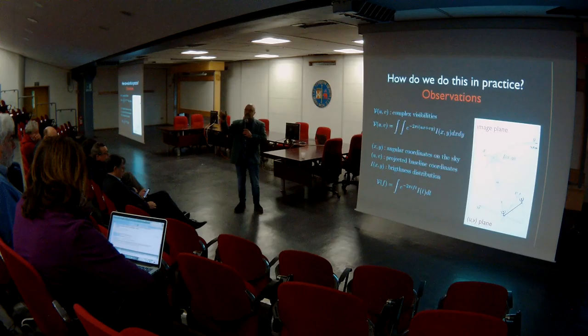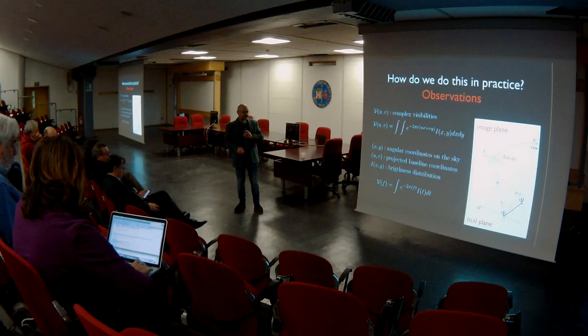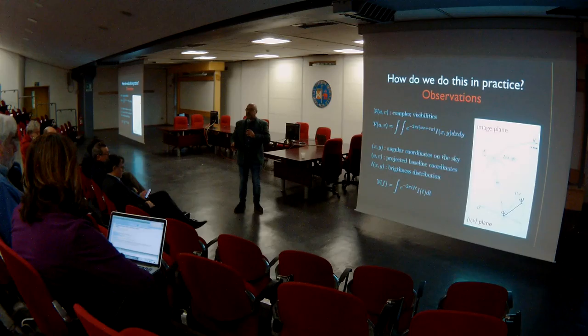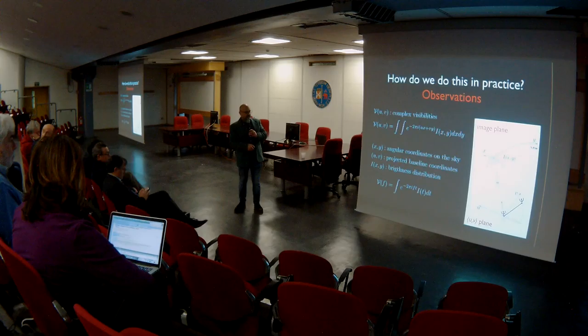X and Y are the angular coordinates projected on the sky, and U and V are the baseline of the two telescopes. So this is a two-dimensional complex Fourier transform — pretty much the same as when we use Fourier transform of time and frequency, just here you are transforming two spatial quantities. And out of this information, you can build an image.